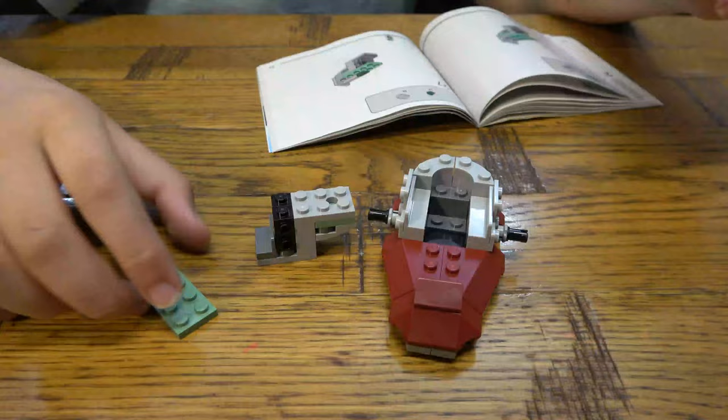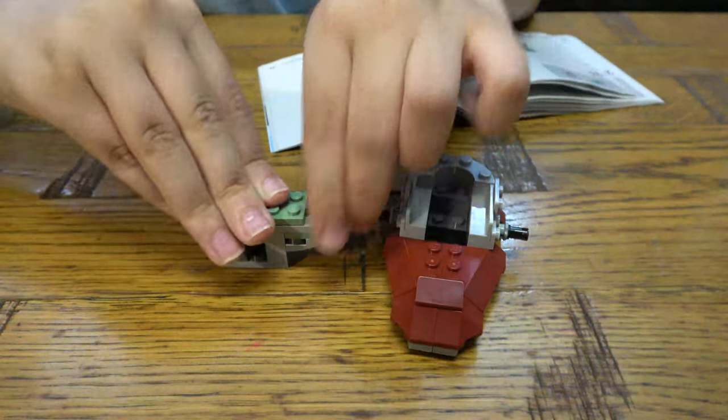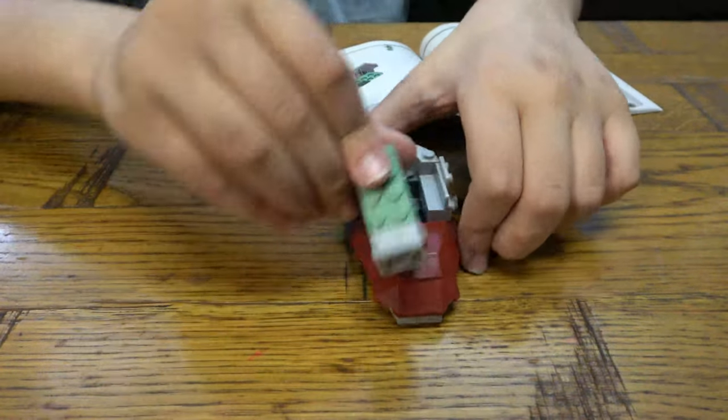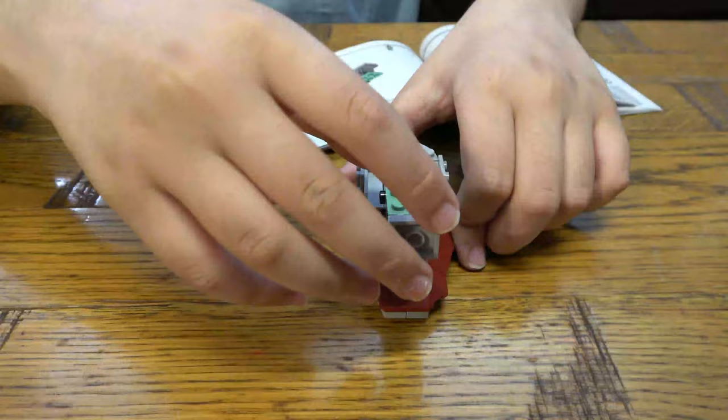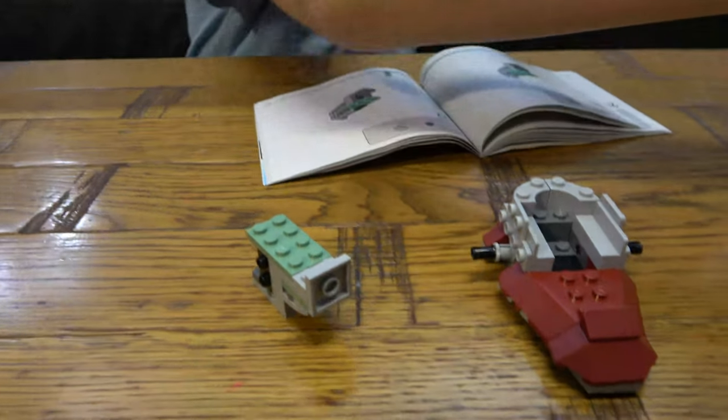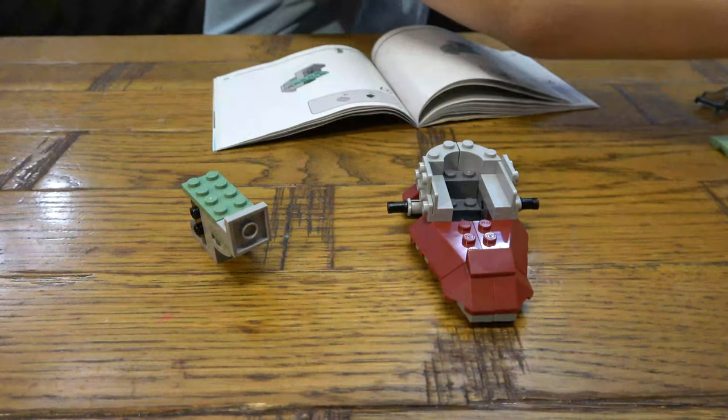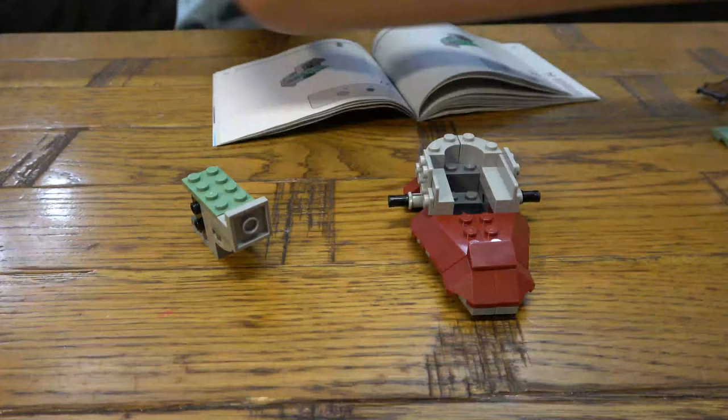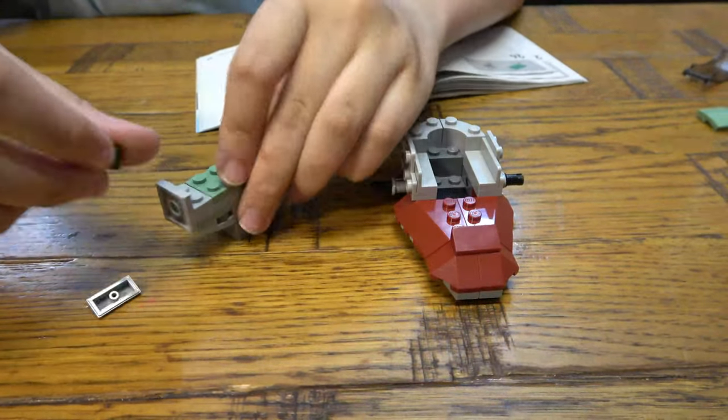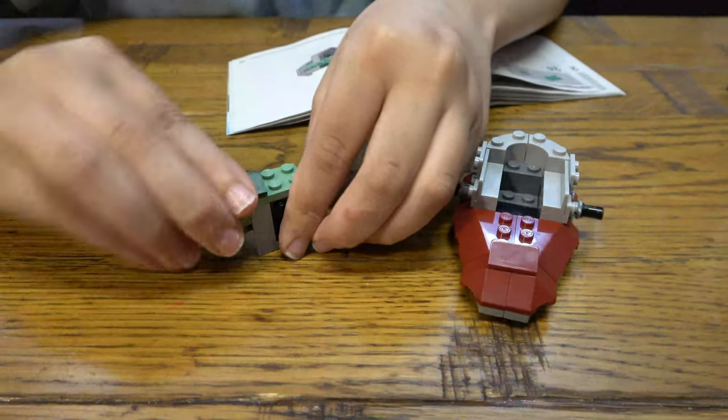It's looking really nice. And now we're going to this bit, so we're gonna put some tiles here. We're going to get this here, so with this here we're gonna add these cheese slope pieces, then a double cheese slope piece.